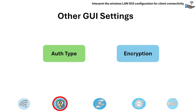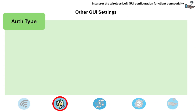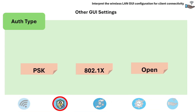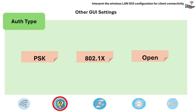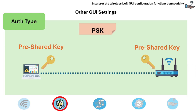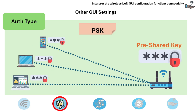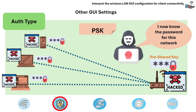There are also other GUI settings to review, like authentication types and encryption. The three common authentication types are PSK, 802.1X, and OPEN. PSK, or pre-shared key, is the simplest form of authentication, commonly used in home and small office networks. It uses a single shared password among all users. While easy to set up, it offers less security compared to other methods, as a compromised PSK can affect the entire network.